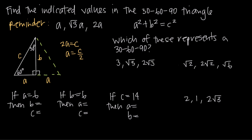So the hypotenuse is always going to be double the length of the shortest side — we have that special relationship between the shortest side and the hypotenuse. What about the longer leg of the 30-60-90 right triangle? Well, because this is a right triangle, we can apply the Pythagorean theorem.